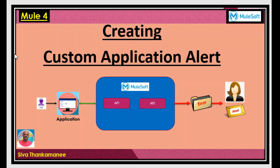This is applicable for any API in MuleSoft. In a single API or group of APIs where there is an error, you can create a custom application alert. This is very important because when there are hundreds of APIs up and running, errors could occur in one or more. Particularly when critical APIs fail and we don't monitor proactively, we will lose precious orders, information, or revenue if we don't fix and process those orders.